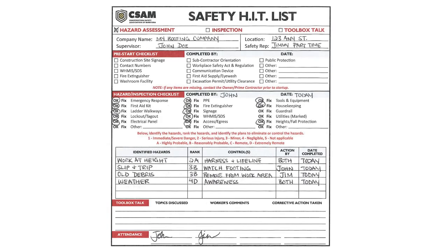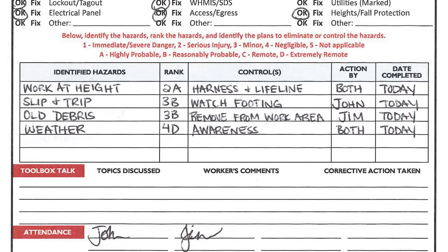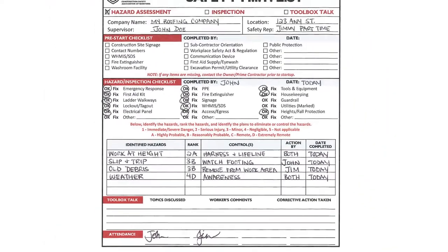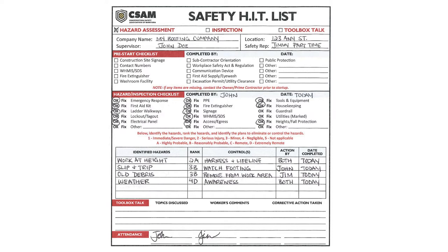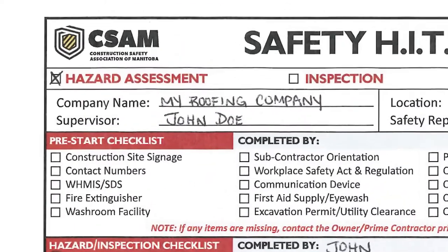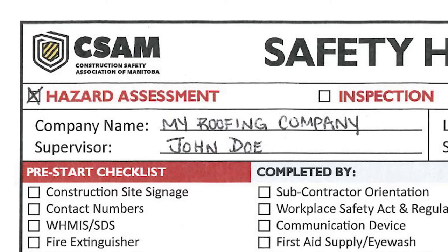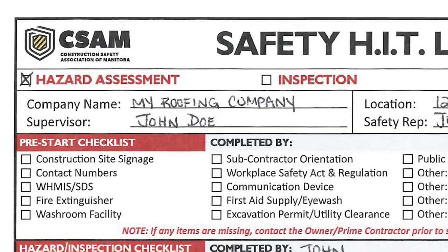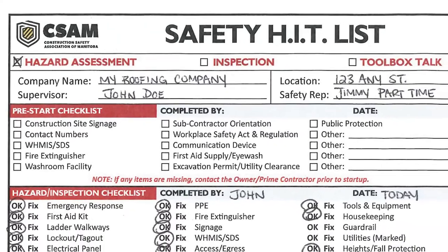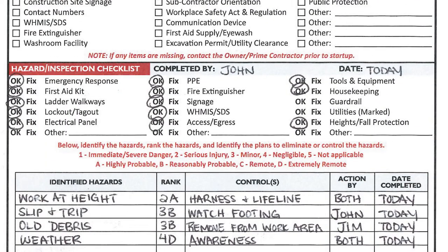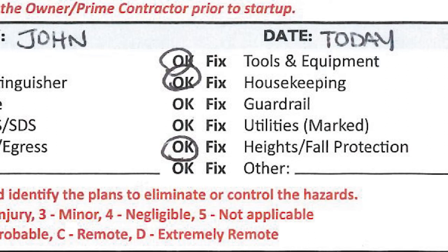As we can now see on this completed Hit List, we have identified everything we just saw with the worker on the roof. You may be using a different template for your hazard assessment document, but the basic foundation is still the same — just apply the principles of this process to your format. We have identified this form as being used for a hazard assessment by X-ing the top left box, followed by all relevant information: company name, site address, and supervisor and safety rep names. Where the section says date on the right-hand side, be sure to always include the year, not just the month and the day.